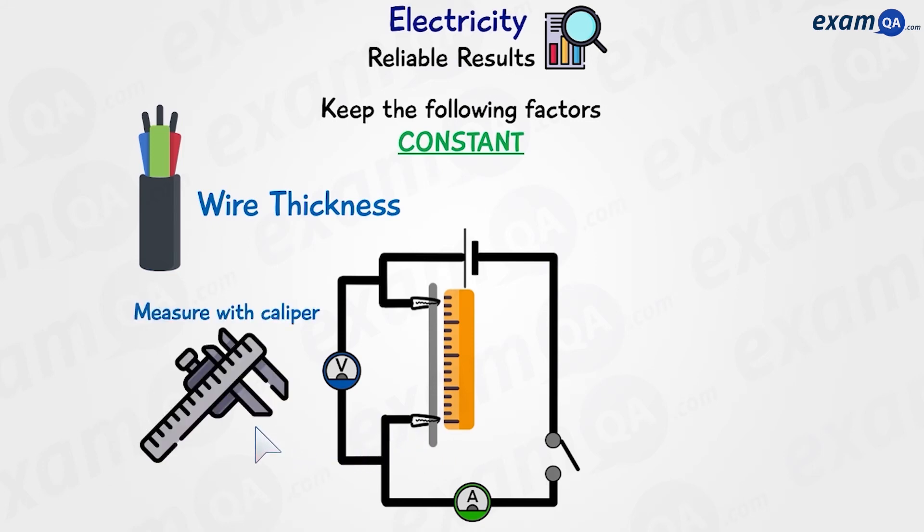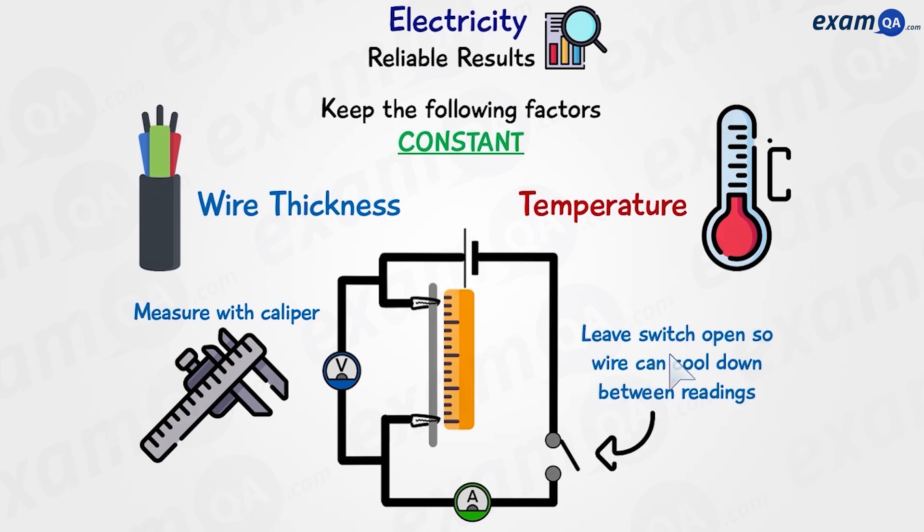The second thing is temperature. Now, throughout the experiment, the wire is going to get hot. So we can leave the switch open between our readings, and this will allow the wire to cool down, and then we can go for the next reading.